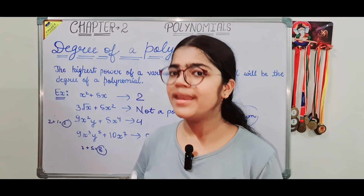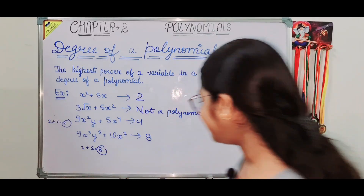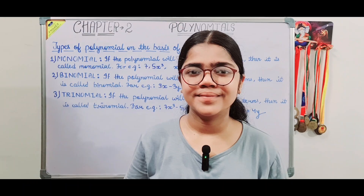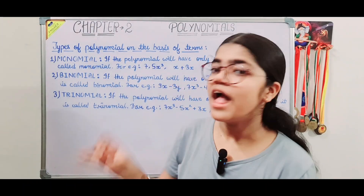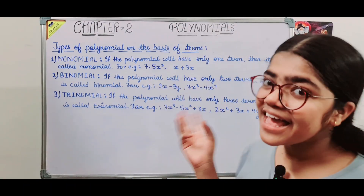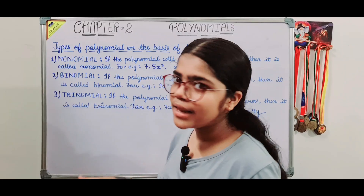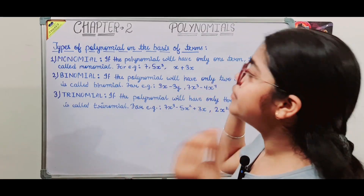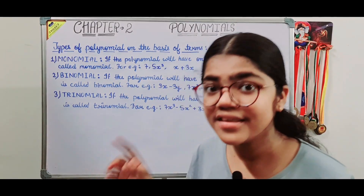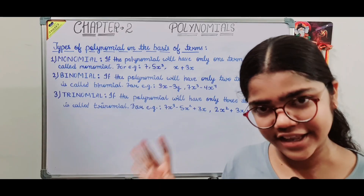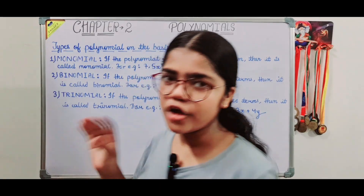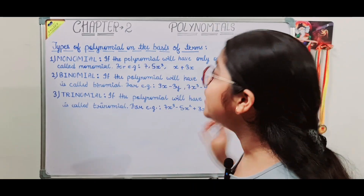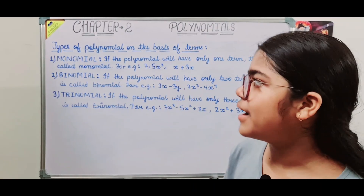Now we will talk about the types of polynomials. We will divide polynomials on two bases: on the basis of terms, and on the basis of degree. First, let's understand classification on the basis of terms. The polynomial is divided into three parts on the basis of terms.